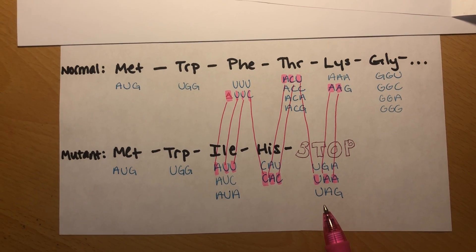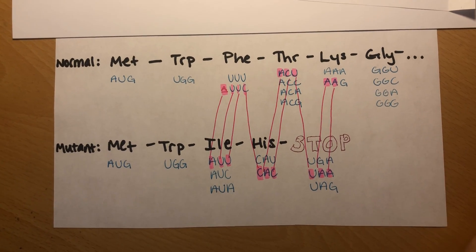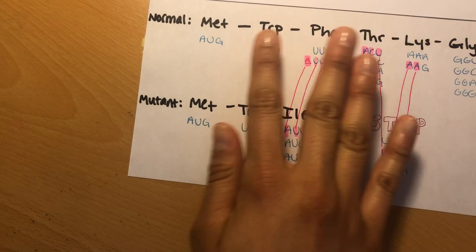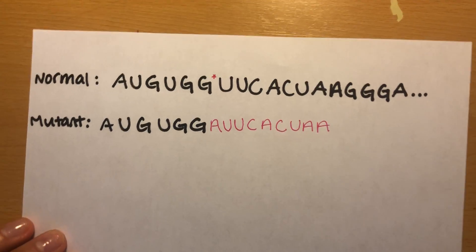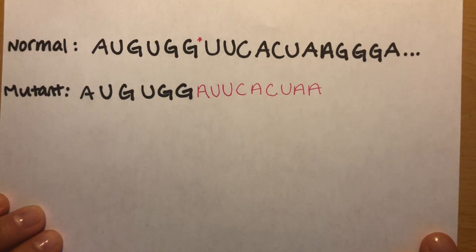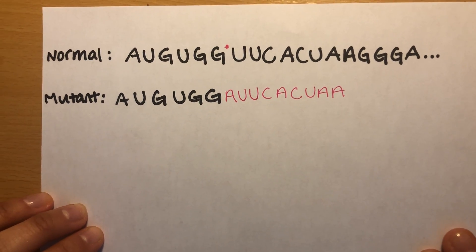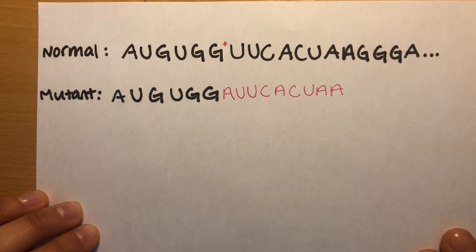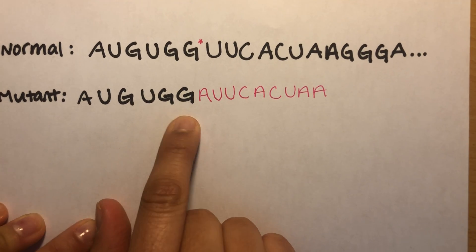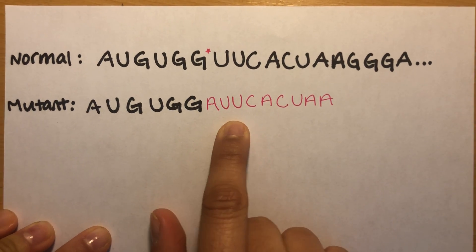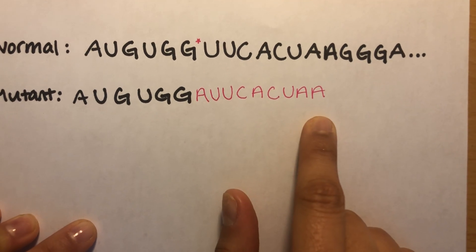As you can see more closely, the whole frame of the mRNA shifted, and therefore this mutation is considered a frameshift mutation. Therefore, the messenger RNA of the mutant protein is AUG, UGG, AUU, CAC, and UAA.